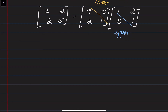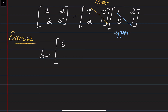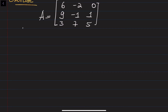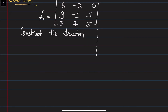Let's do an exercise. We need to bring a bigger matrix into LU form. Let's say the matrix A is a 3 by 3 matrix: [[6, -2, 0], [9, -1, 1], [3, 7, 5]]. What I'm going to do is first construct the elementary matrix on one side and multiply the elementary matrix to A on the other side.